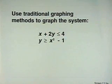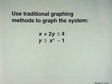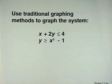Now it's time for you to try a problem on your own. Graph the following system: x plus 2y is less than or equal to 4, and y is greater than or equal to x squared minus 1. Turn off the tape and try to do the graph on your own, then turn the tape back on to check your work.